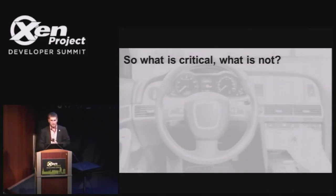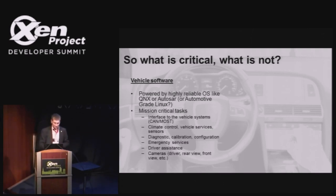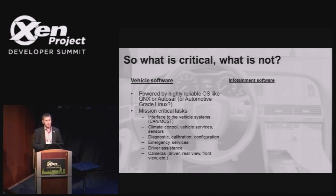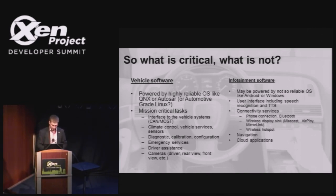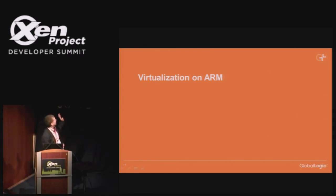We decided to think about what's critical and what's not critical. Vehicle software — we call it critical stuff — is usually powered by QNX or some Autosar OS. It is responsible for mission-critical functions like CAN bus, LIN bus, climate control, vehicle services, diagnostics, brakes, and maybe driver assistance in future. Infotainment software is not mission critical. It can be powered by Windows like Ford Sync or Android in the future. It handles user interface, text-to-speech, speech recognition, phone connection, wireless hotspot, navigation, cloud applications, and multimedia. If it breaks, you will not hit a tree. That's kind of why we decided to go with virtualization.